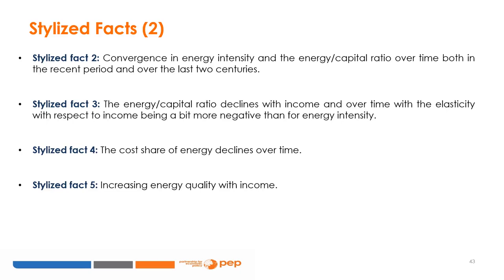Stylized Fact 4: The cost share of energy declines over time, based on evidence for Sweden, the UK and the US. If the elasticity of substitution between energy and capital/labour is less than unity and effective energy per effective worker increases over time, then the cost share will go down. It further seems that the relative price of energy to output follows an inverted U-shaped path, and the price of energy relative to the price of labour falls. Stylized Fact 5: Energy quality increases with higher incomes. In general, energy carriers do not decline in actual use when their share falls as an energy transition takes place. Due to structural changes of economies, the relative importance of oil has been falling at all income levels over the past decades.